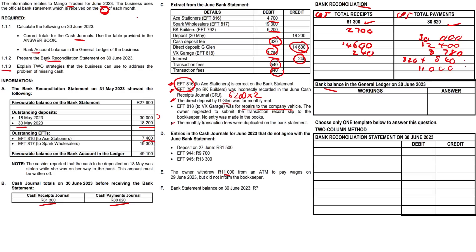So 81,300 plus 2,700 plus 14,600 plus 240 gives us a total of R98,840 for the CRJ. Then 80,620 plus 30,000 plus 12,400 plus 3,780 plus 320 plus 540 plus 11,000 gives us R138,660 for the CPJ.